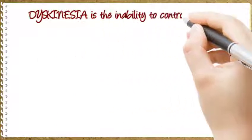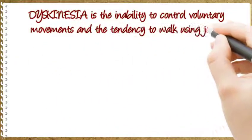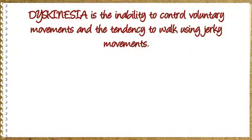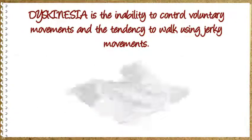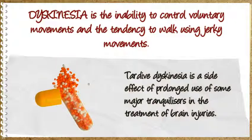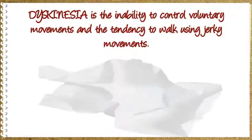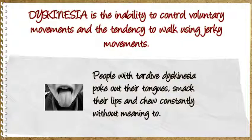Dyskinesia is the inability to control voluntary movements and the tendency to walk using jerky movements. It comes from dys meaning abnormal and kinesia meaning movement. Tardive dyskinesia is a side effect of prolonged use of some major tranquilizers in the treatment of brain injuries. People with tardive dyskinesia poke out their tongues, smack their lips, and chew constantly without meaning to.